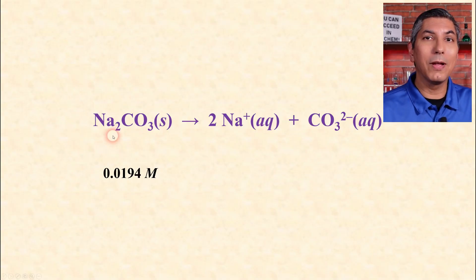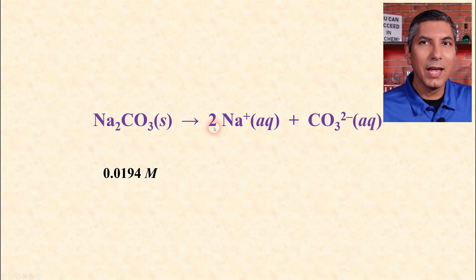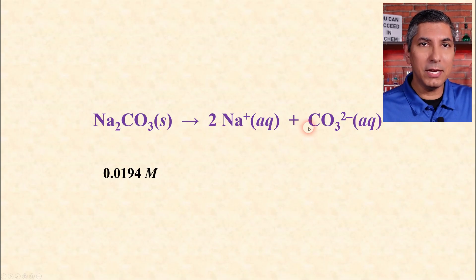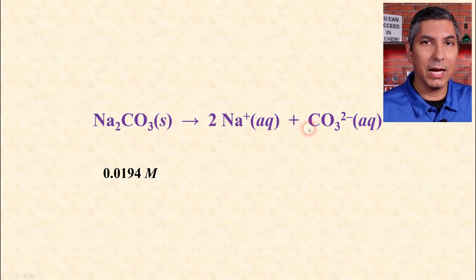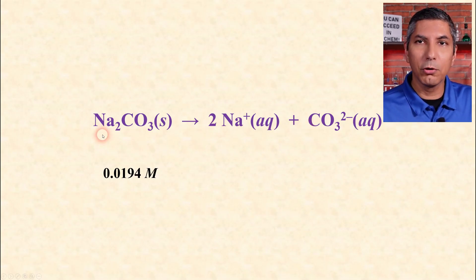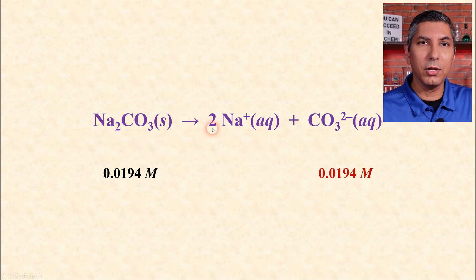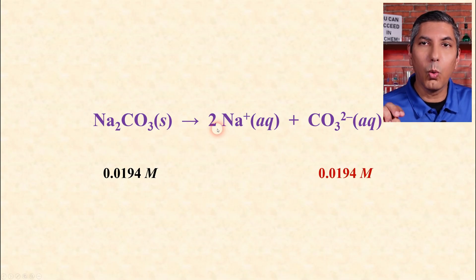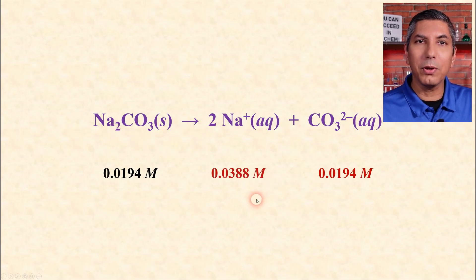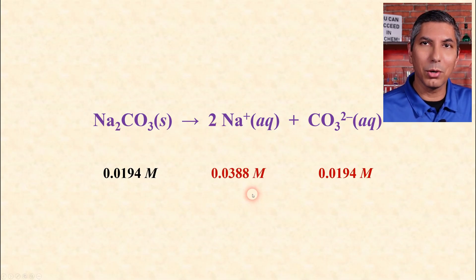Sometimes they'll ask for the molarity of individual ions. When Na2CO3 dissociates, it produces two sodium ions and one carbonate ion. So the molarity of carbonate ions is also 0.0194 M. Since there's a coefficient of 2 in front of sodium, the molarity of sodium ions is twice the compound's concentration — 0.0388 M sodium ions.